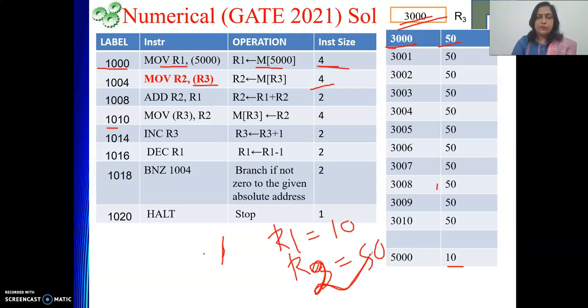Now add R2, R1. It is kind of similar to our previous example. So R2 value will become 10 plus 50. R1 is holding 10, R2 is holding 50, so it will be 60. So right now R2's value is 60.